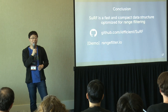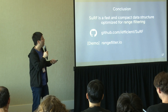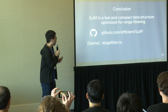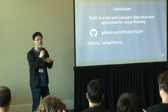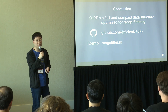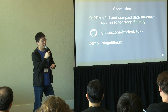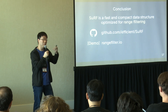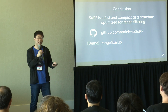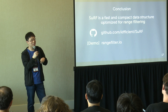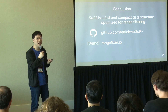So next time you think about using a filter to speed up your range queries, now you know where to go. SURF's source code is publicly available on GitHub under the Apache license — you are welcome to download and use it. We also have a demo website where you can configure your keys and configurations to visually see how SURF works. Our hope is that SURF can make real impact on building systems and databases, and we need your feedback to make SURF better and better. Thank you very much.